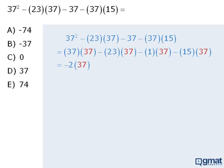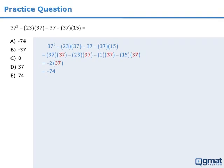Now negative 2 times 37 equals negative 74. So our answer here is A.